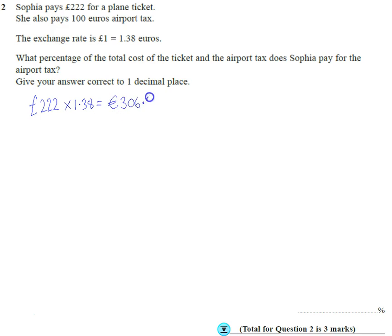So if I now find the total price of the ticket and add on tax as well, I'm obviously going to add on the 100 euros tax, so it's going to be 406 euros and 38 cents.